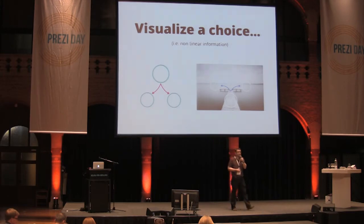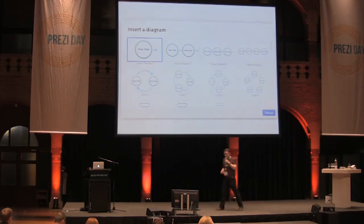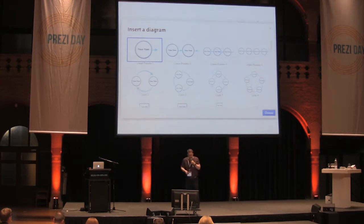Not a lot of information is linear — a lot of information is about divergences and convergences, things you wouldn't draw in a bullet list. Here we've got a decision point, and a great starting point for that is the diagrams in Prezi.